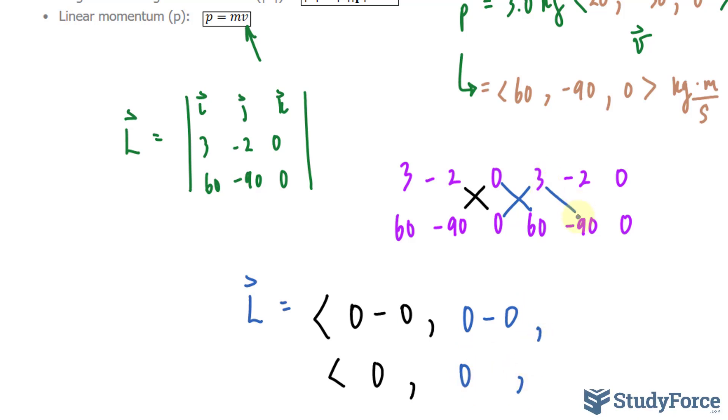Then, 3 times negative 90 makes negative 270, minus negative 2 times 60 is negative 120. Combining these two numbers, we get negative 150.